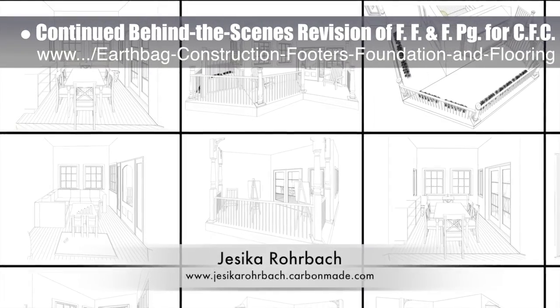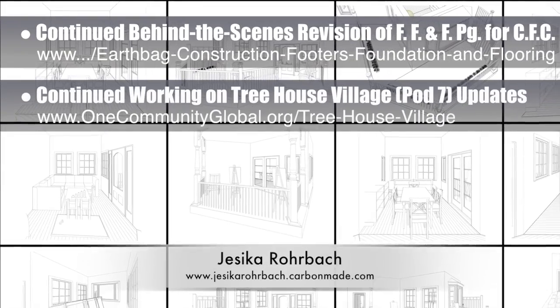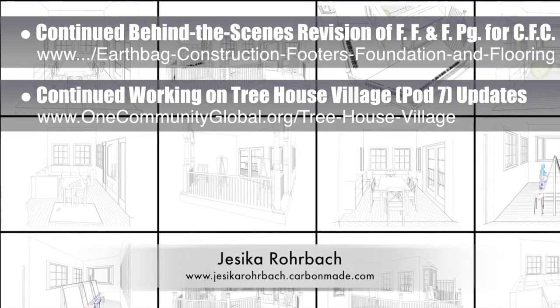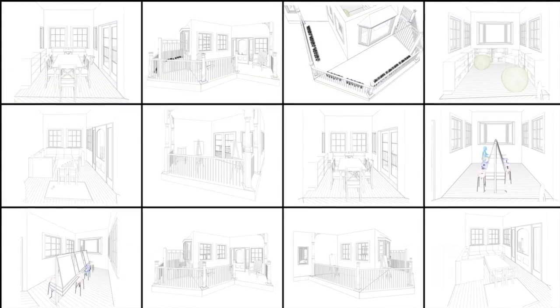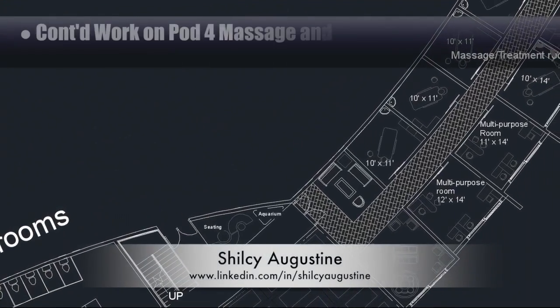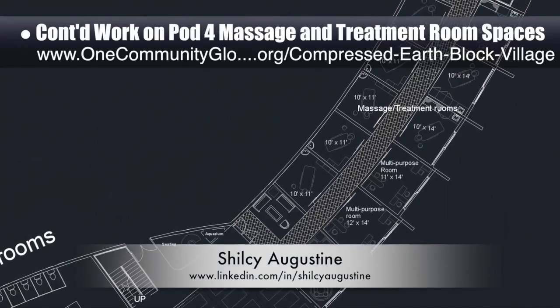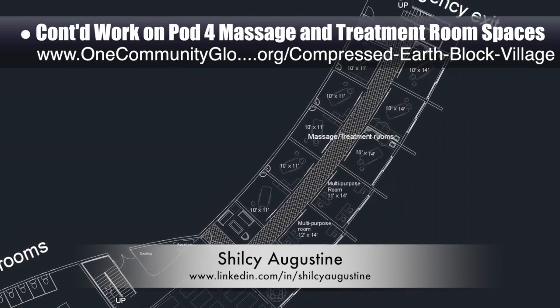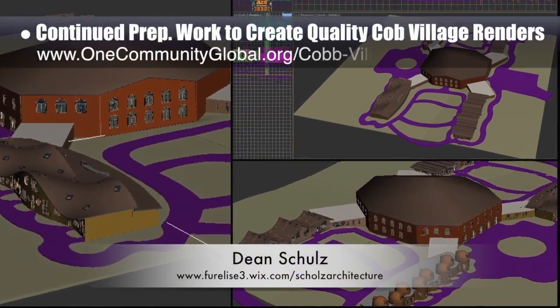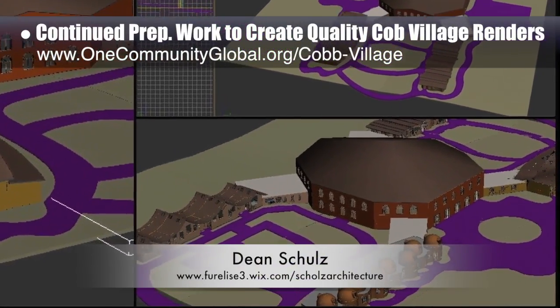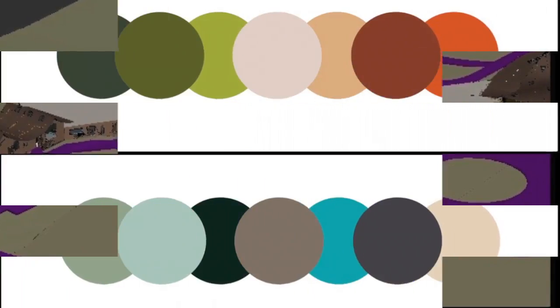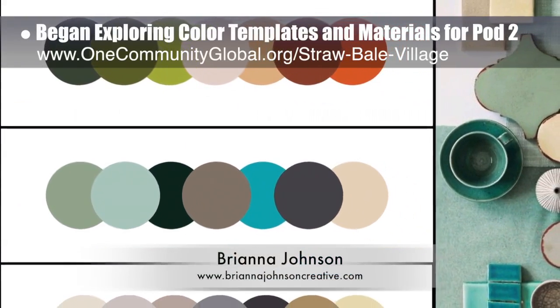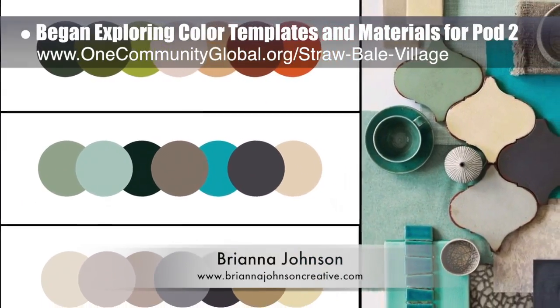Working on the Treehouse Village Pod 7, Jessica Rohrbach, architectural drafter, designer, and 3D modeler, continued working on social and recreation spaces updates — design updates 3.0 — including reading spaces, kids' play spaces, game spaces, and patios. Shilsey Augustine, architect, continued developing the compressed earth block village pod 4 massage and treatment room spaces, finalizing layouts including sinks and sliding glass doors for all south-facing walls. Dean Scholls, architectural drafter, further developed Cobb Village Pod 3 renders — update 5.0 — focusing on roads and pathways between north and south wings. Brianna Johnson, interior designer, began exploring color templates and materials for straw bale village pod 2.